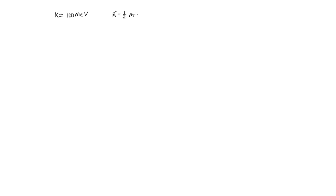We're told that the kinetic energy of an electron is equal to 100 mega electron volts, and we're asked to find its speed using the equation K equals one half mv squared.